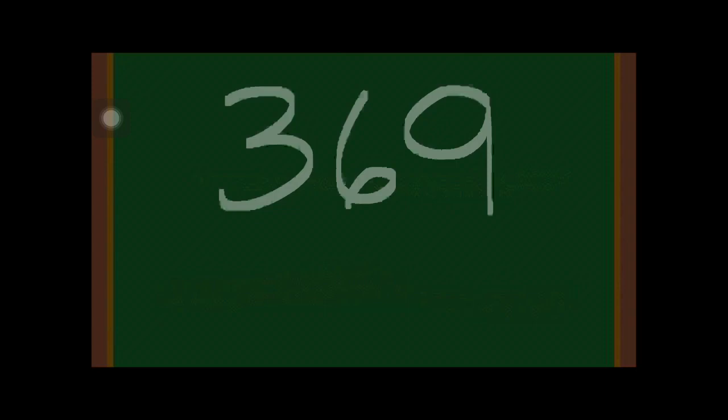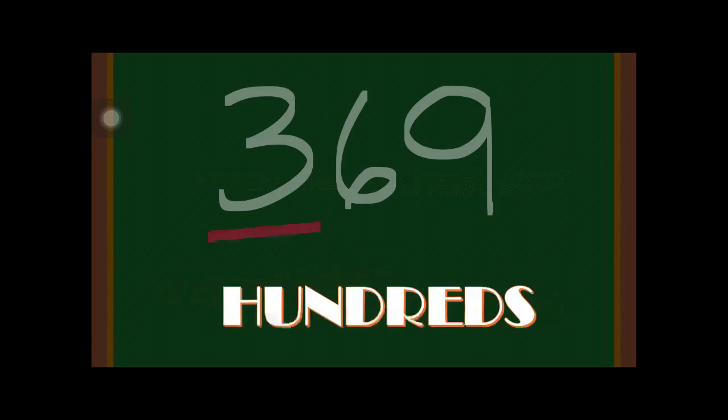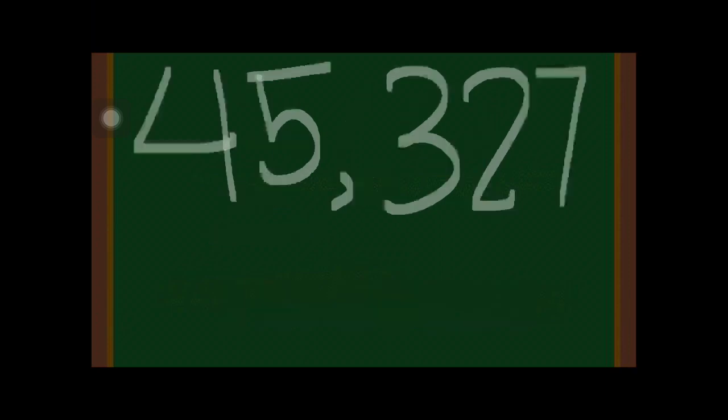Now, what if you only have a three-digit number, like 369? We use the same procedure — start from right to left. If the underlined digit is digit 3, what is its place value? Starting from right to left, digit 3 is in the third position, so the place value of digit 3 is the hundreds place.